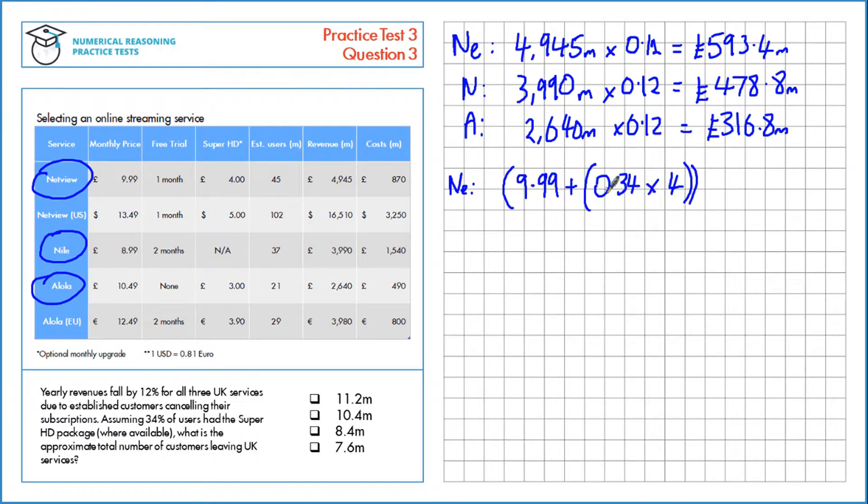Next, we have this over one month, and we know that these are all established users, so they don't get a free trial. So, we need to calculate it over 12 months. Over 12 months for Netview, the average customer pays £136.20. Make the same calculation for Niall and Alola, the average customer, using their numbers too.